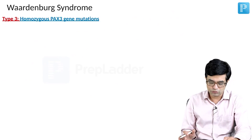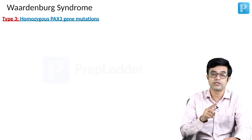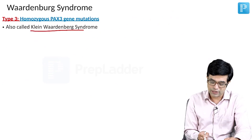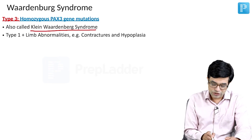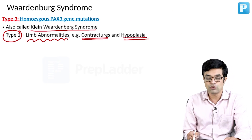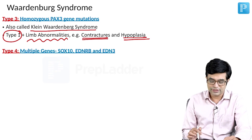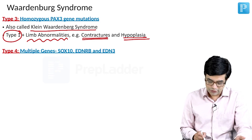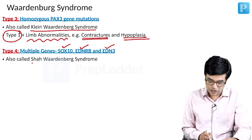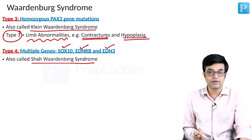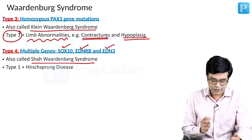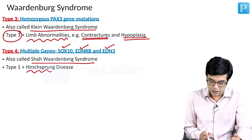Type 3 has homozygous PAX3 gene mutations — in Type 1 it was heterozygous. Type 3 is also called Klein-Waardenburg syndrome. In addition to Type 1 features, patients will have limb abnormalities like limb contractures and hypoplastic limbs. Type 4 has three gene types described: SOX10 gene, EDNRB gene, and EDN3 gene. It is also called Shah-Waardenburg syndrome and comprises Waardenburg syndrome features along with Hirschsprung's disease.